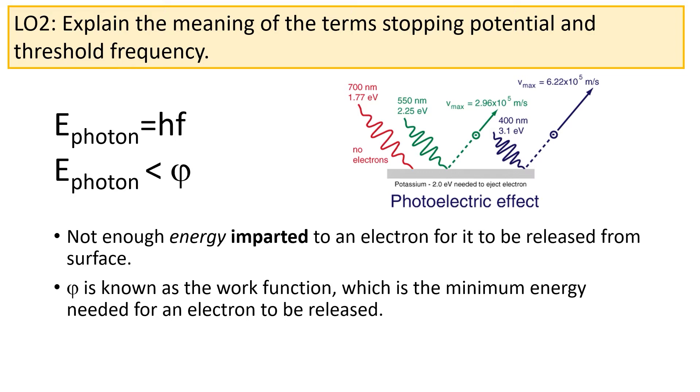The energy of a particle of light, that is a photon, is equal to hf, where h is Planck's constant and f is the frequency. If this energy is below a certain value known as the work function φ, the photon will not have enough energy to release an electron from the surface. This is the case no matter what the intensity or the brightness of the light is.